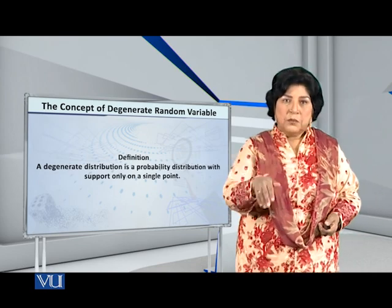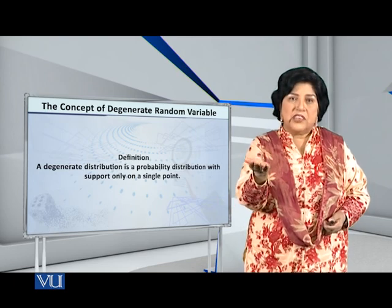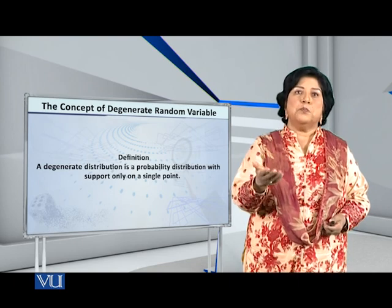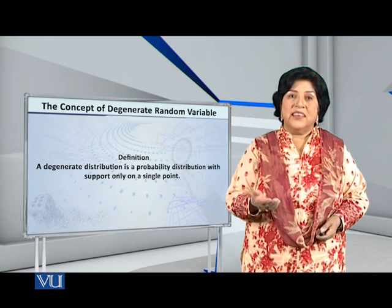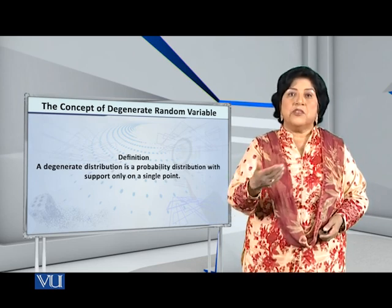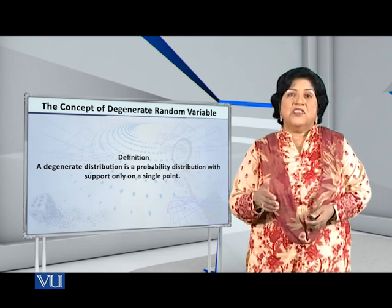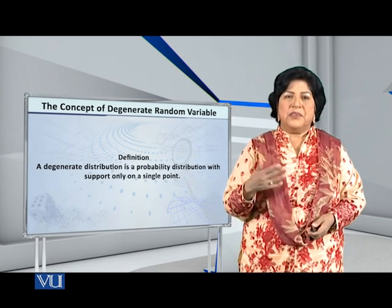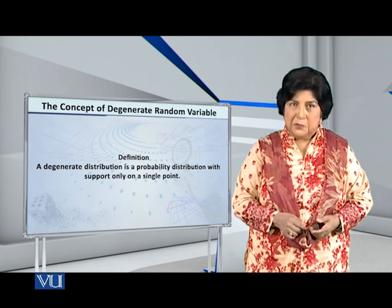What is the right thing? A degenerate distribution is such that the support on the x-axis is only one single point, located on one point. Such a distribution is called a degenerate distribution, and such a random variable is called a degenerate random variable. So let me try to give you one or two examples.